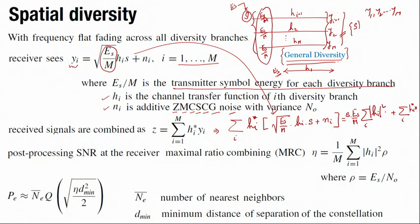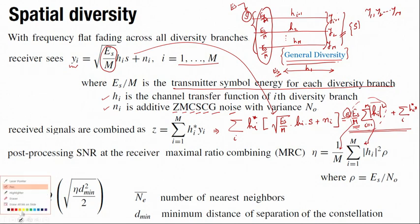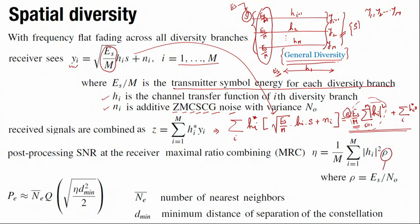From this expression the probability of error can be calculated using a standard expression involving the number of nearest neighbors N̄ from the constellation, the minimum distance d_min² of the constellation, and the received SNR η. Since h_i are random variables, |h_i|² and hence η are also random variables, which means the probability of error is also a random variable. Therefore we are interested in the average probability of error.